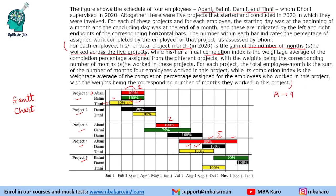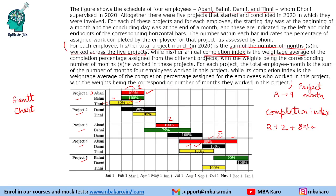The annual completion index is the weighted average of the completion percentage assigned from different projects, with the weights being the corresponding number of months the person worked in those projects. For example, if a person works two months at 100%, two months at 100%, and five months at 80%, the numerator is 2 + 2 + 4 = 8, and the total is nine months. So the completion index is 8/9, which is 88.89%.